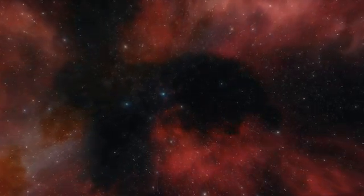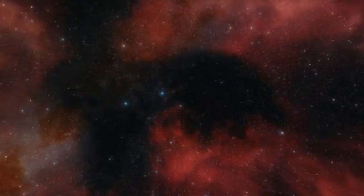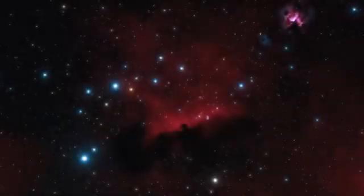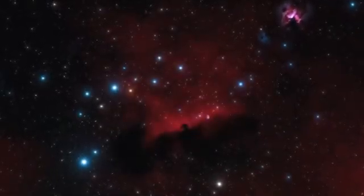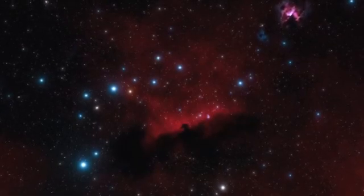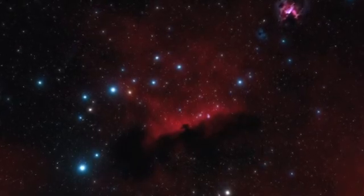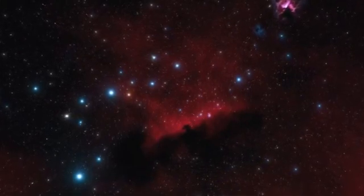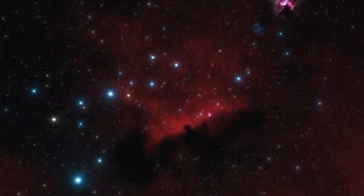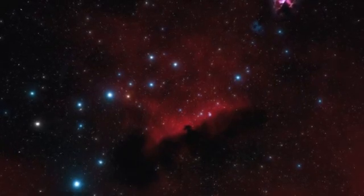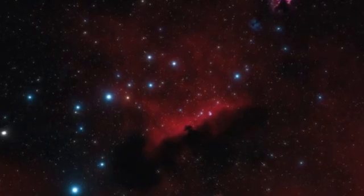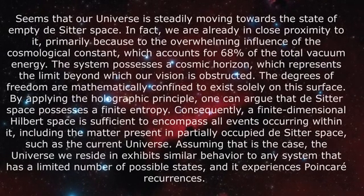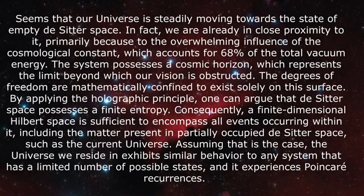It is possible that the universe may enter a second inflationary epoch, or assuming that the current vacuum state is a false vacuum, the vacuum may decay into a lower energy state. It is also possible that entropy production will cease, and the universe will reach heat death. It is suggested that, over vast periods of time, a spontaneous entropy decrease would eventually occur via the Poincare recurrence theorem, thermal fluctuations, and fluctuation theorem.